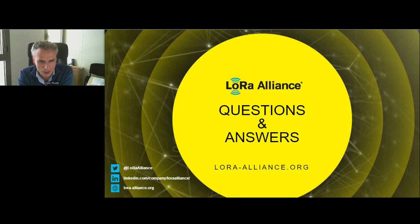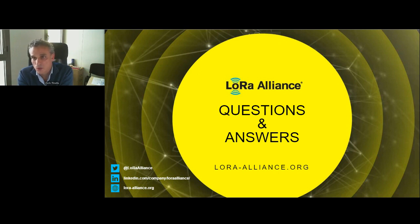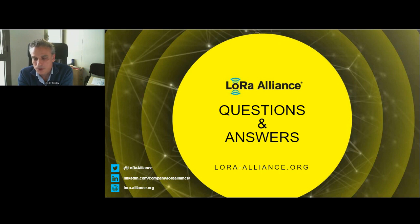Apostolis asks: why isn't an RF repeater sufficient? Two main arguments: security and power consumption. We paid a lot of attention to making sure the relay responds to the same security standard we offer with LoRaWAN today. We also paid a lot of attention to making the relay a low-power solution. A simple RF repeater would not have been sufficient for those purposes.